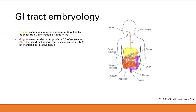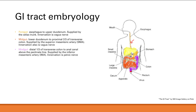Finally, we have the hindgut, shown in purple, which spans from the distal one-third of the transverse colon to the anal canal above the pectinate line. The blood supply is from the inferior mesenteric artery, the IMA, and the innervation is from the pelvic nerve.